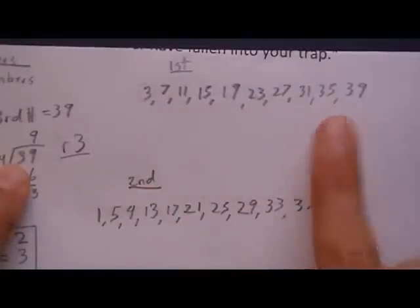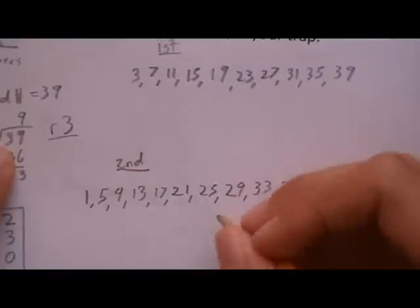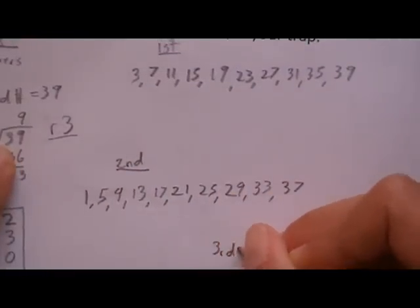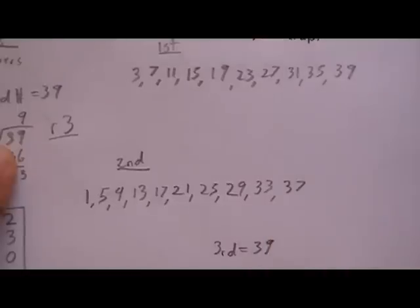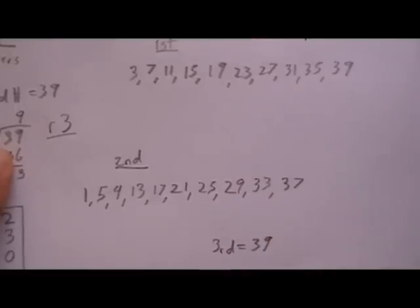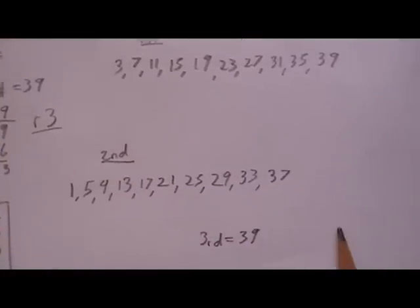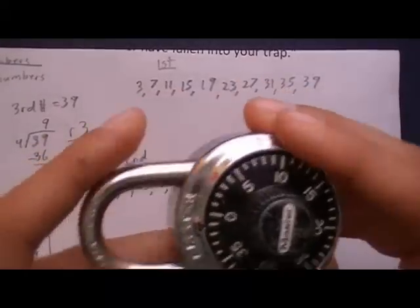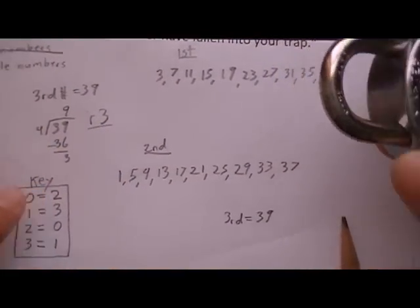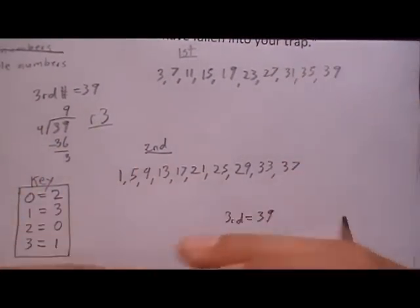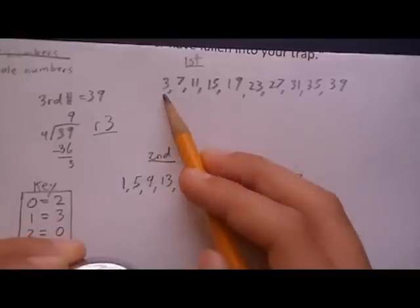So now that we have the first numbers and the second number and your third, all you have to do now is try them all. So all you have to do now is take your combination lock and it's just trial and error. So we are going to start with 3, then 1, and 39.